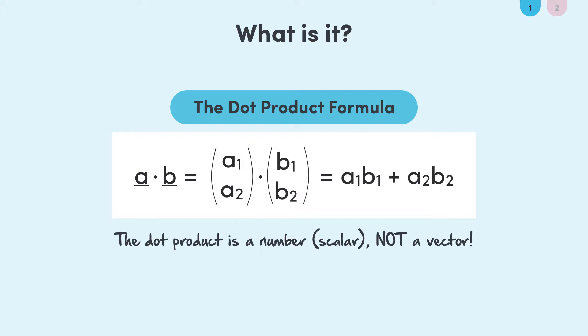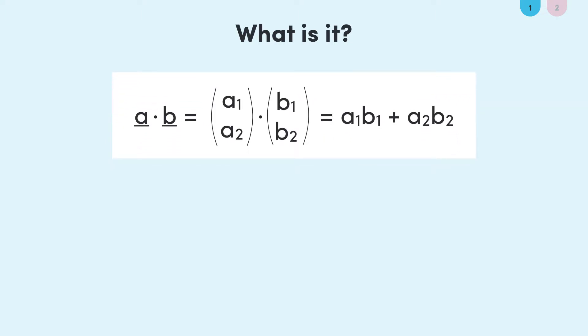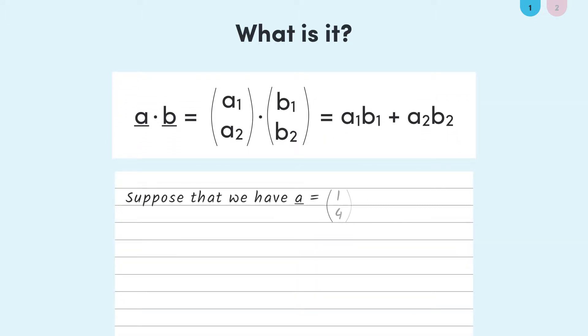The result is that the dot product will just be a number — it will not be a vector. So, for example, if these are our vectors A and B, then the dot product of A and B will just be the top entries multiplied together, 1 times 2, plus the bottom entries multiplied together, 4 times 3, and that's 2 plus 12, which is 14. The dot product between A and B is 14.